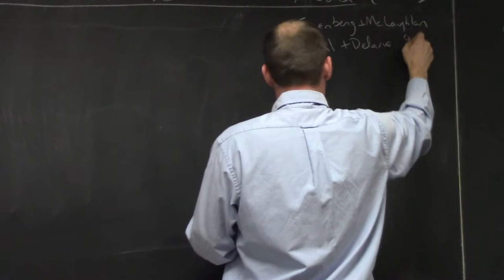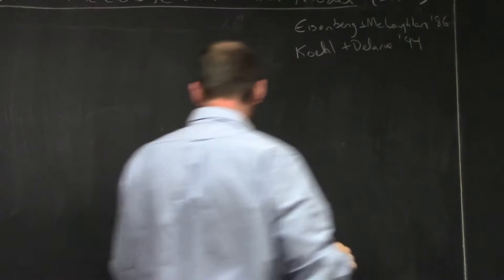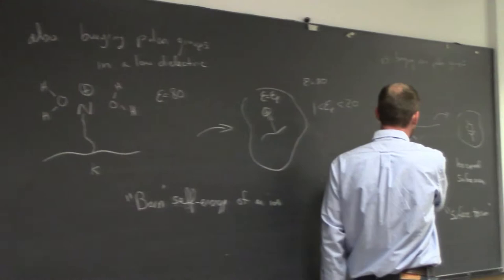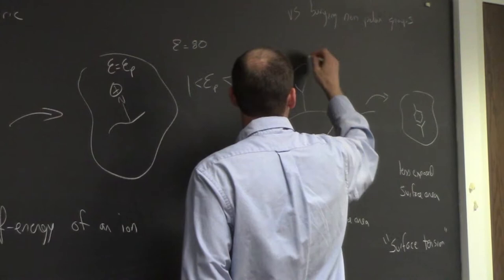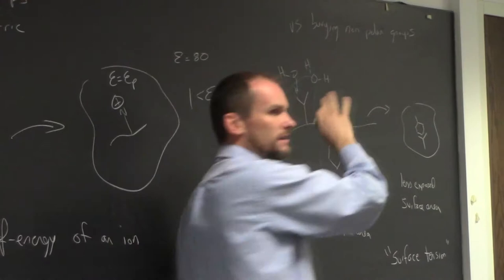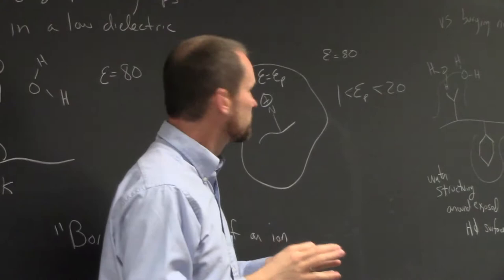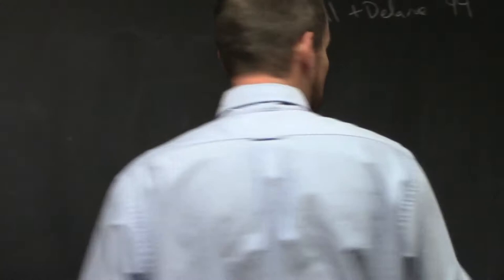The surface tension here is a little funny because it's not like the macro scale where you're dealing with a bubble and a macroscopic property - there are individual water molecules here. The notion that a continuum model makes sense is a little funny, but it turns out it works in some cases and people do use it even though we're definitely at the range where the continuum assumption should be breaking down - we are at the molecular scale here.